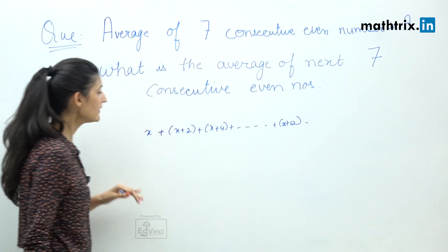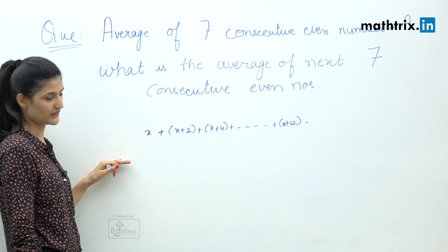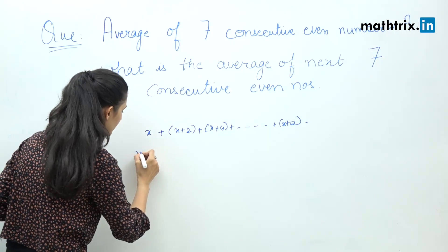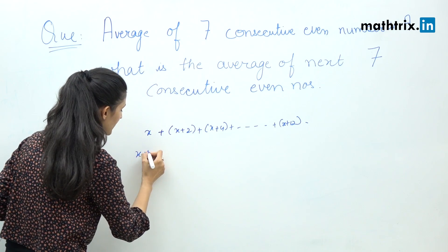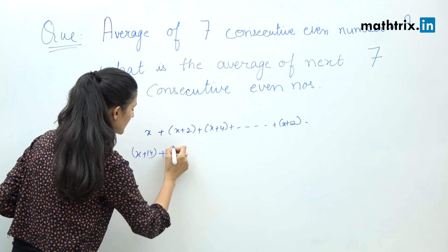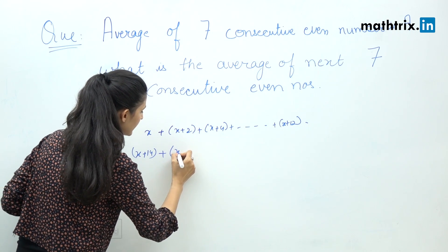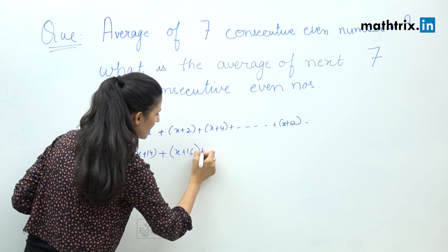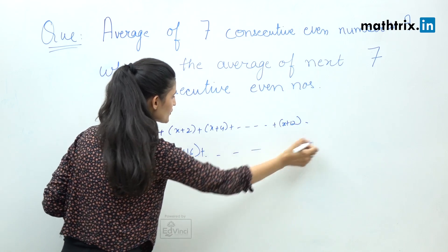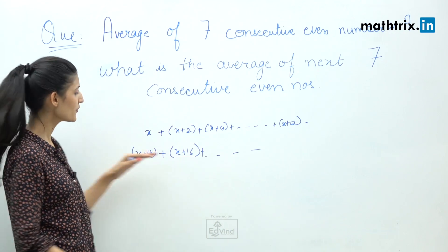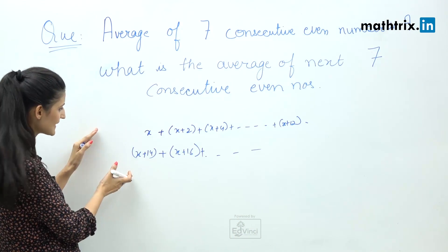The next 7 numbers in the series would start with x plus 14, then x plus 16, and so on. You don't have to go further than this — just observe closely.